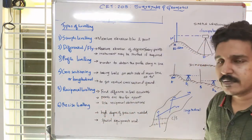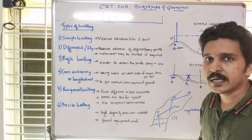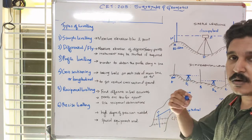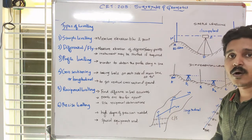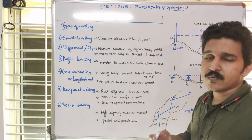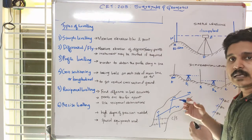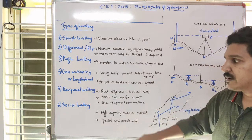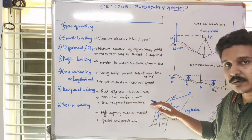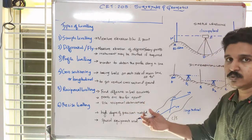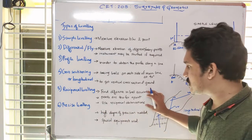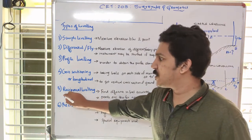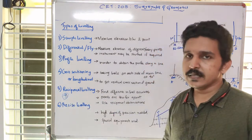Reciprocal leveling is a more precise method. When objects are very far away, the measured values may not be clearly visible, causing blurring or parallax errors. We use special equations to counter these errors and find the difference in level accurately. More accuracy is important when the points are very far apart. We will discuss reciprocal leveling in a separate video, as it involves a derivation and problem, and it is very important for exams.